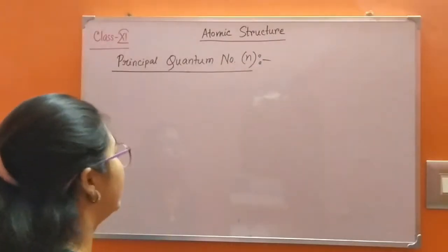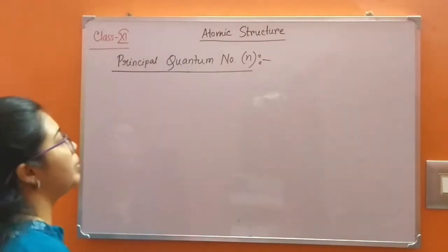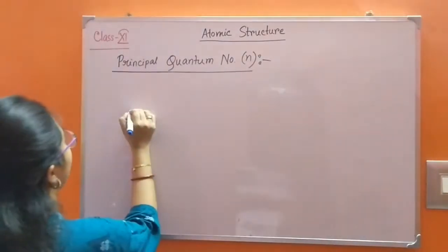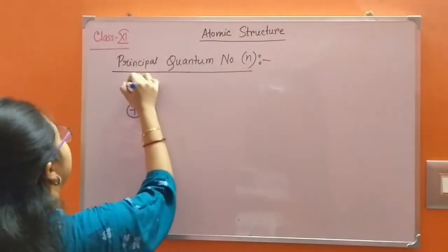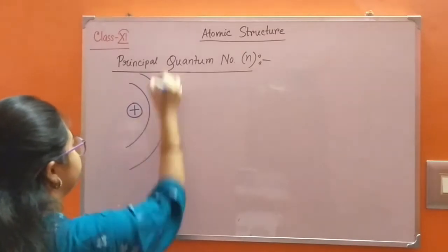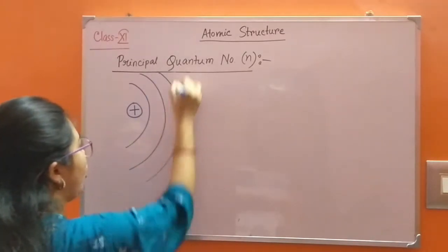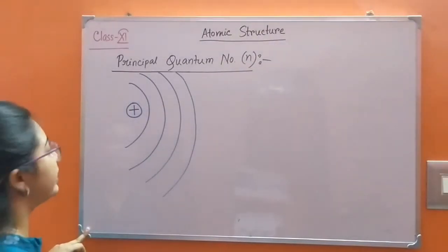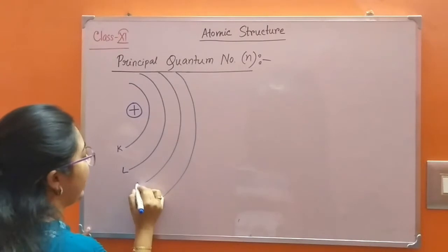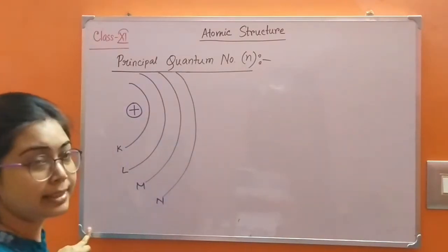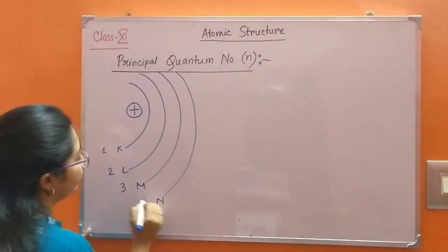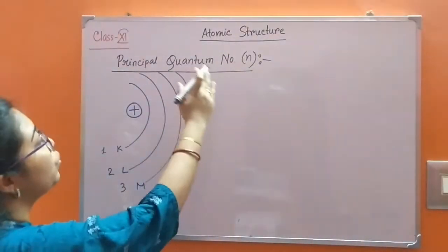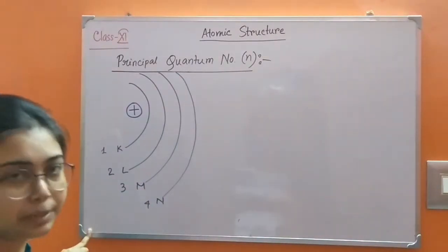Principal quantum number is represented by N. From Bohr's theory, it is already known that electrons are moving around the nucleus. These are the orbits having a definite amount of energy, and these orbits are designated as K, L, M, N shells or 1, 2, 3, 4 numbers. This number is known as the principal quantum number, represented by N.